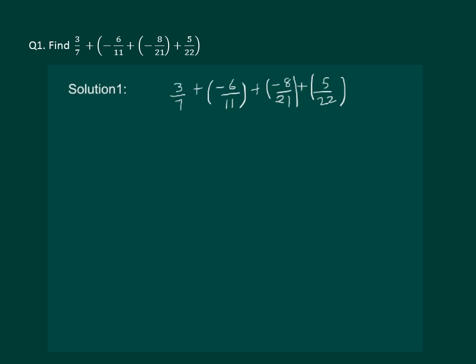Clearly, all the terms are rational numbers. So the procedure would be to find the LCM of 7, 11, 21 and 22. We find that LCM of 7, 11, 21 and 22 is equal to 462. So now let us add all the given rational numbers.